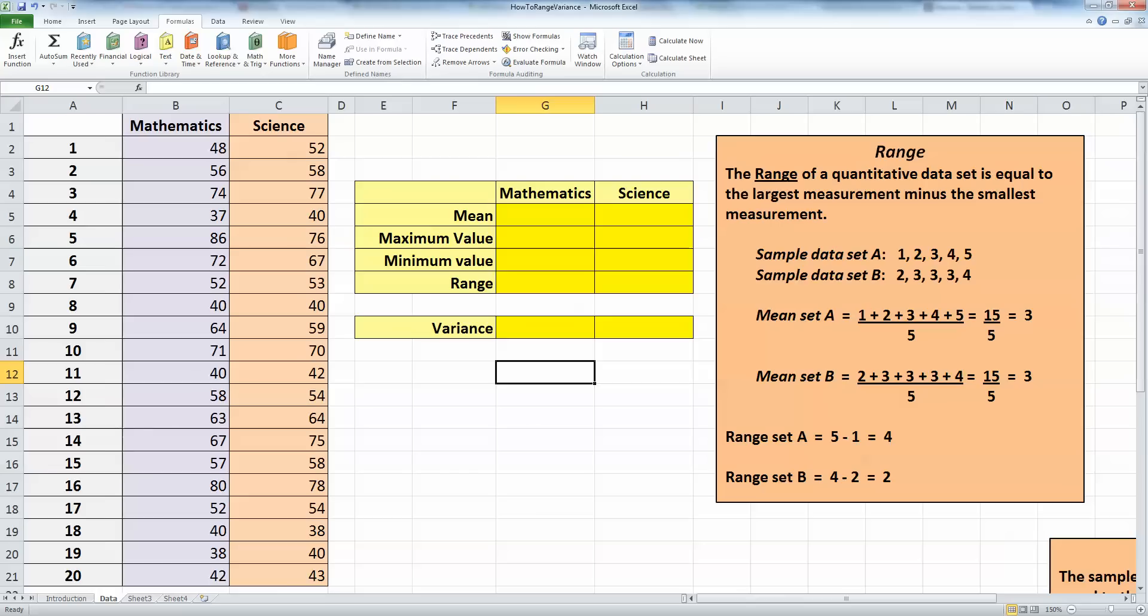So if we take a quick look at two simple data sets here, here's data set A with values of 1, 2, 3, 4 and 5 and sample data set B with values of 2, 3, 3, 3 and 4.